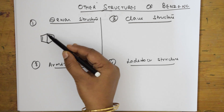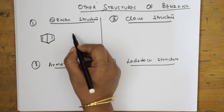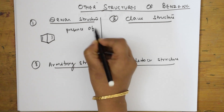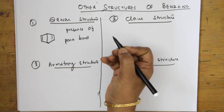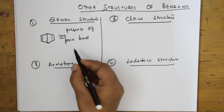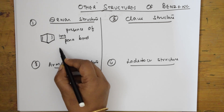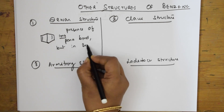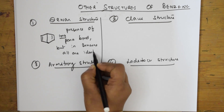This structure was not accepted because the bonds are not identical — this long para bond is different. Why didn't we accept this? Because of the presence of a long para bond between carbon and carbon. But in benzene, all bonds are identical. That's why this structure is not accepted.